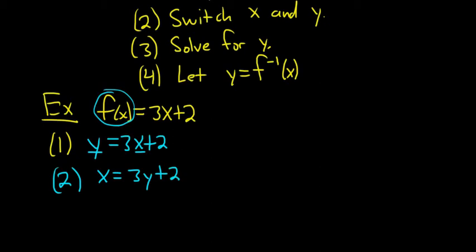And then step three, we have to actually solve for y. So in this case, we have to isolate the 3y. So we'll subtract 2 from both sides. So we get x minus 2 equals 3y.